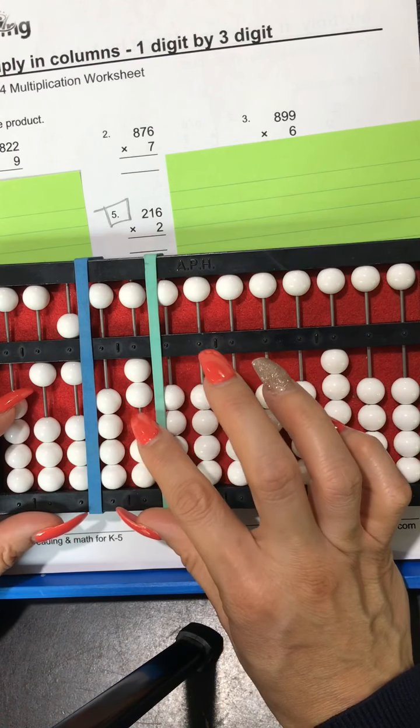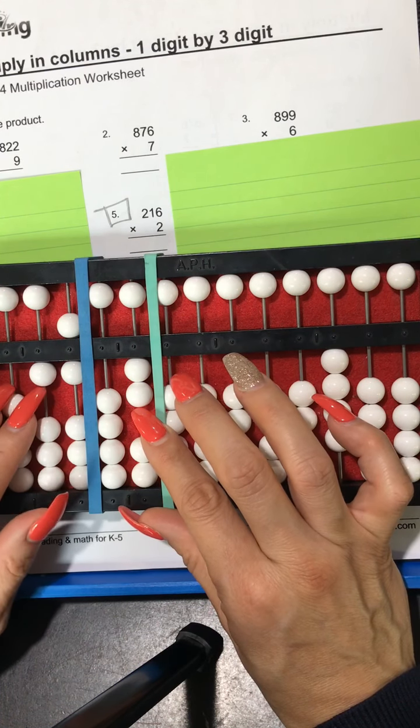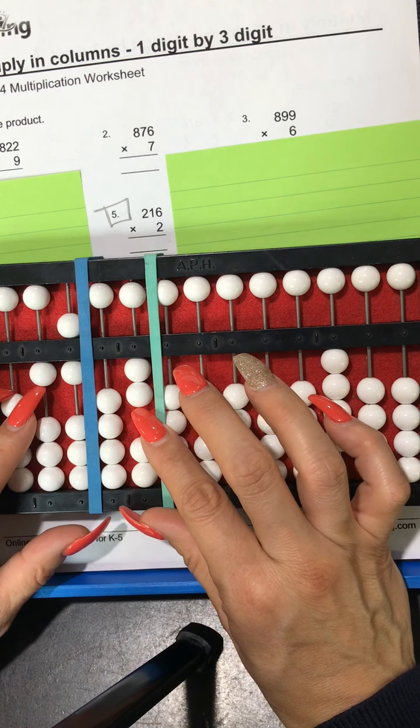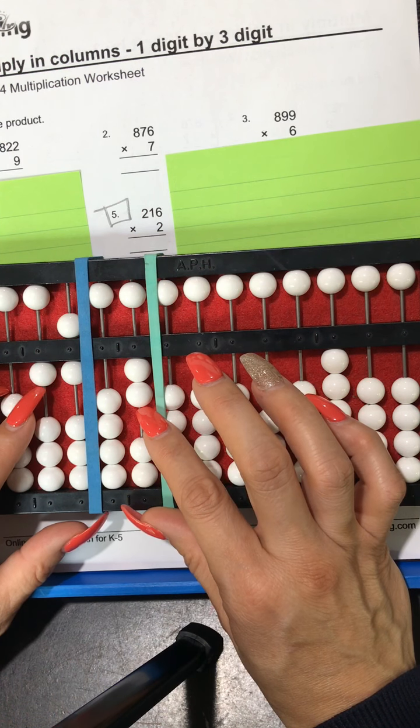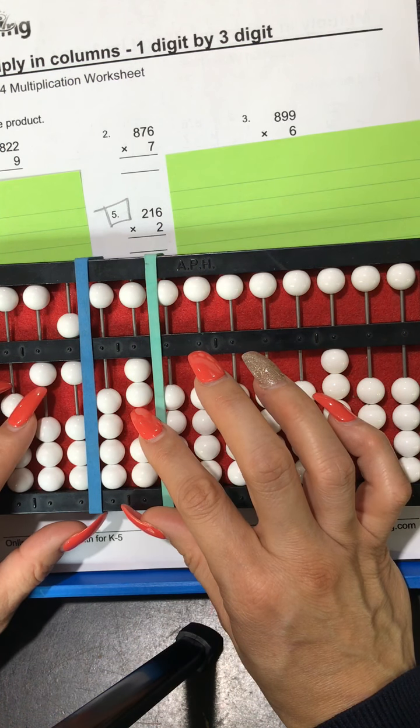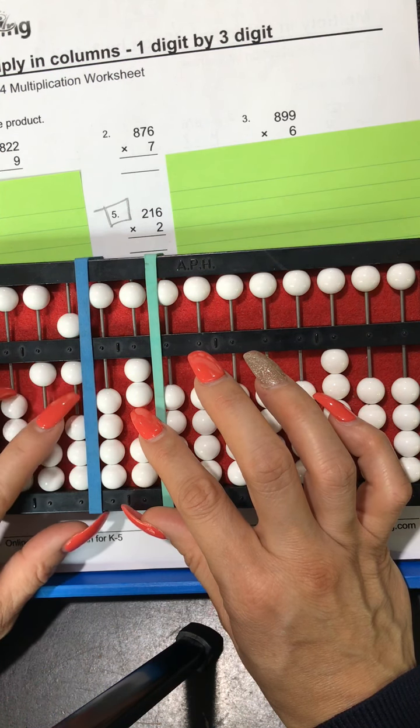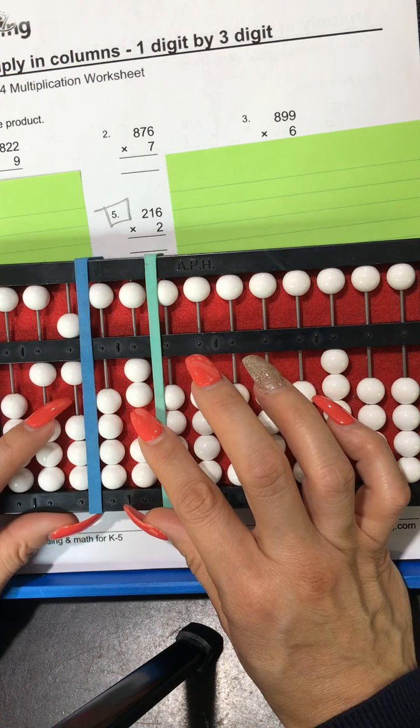And now I say 2 times 1 is 2 right or we can say 2 times 10. Okay so 2 times 1 is 2 but don't forget to add that zero so if we add a zero to 2 it makes it 20.